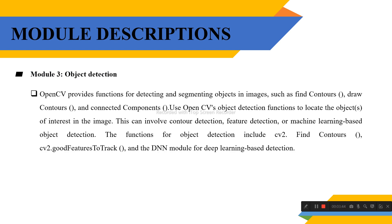Object detection: OpenCV provides functions for detecting and segmenting objects in images, such as findContours, drawContours, etc. The DNN (Deep Neural Network) module is used for deep learning-based detection.